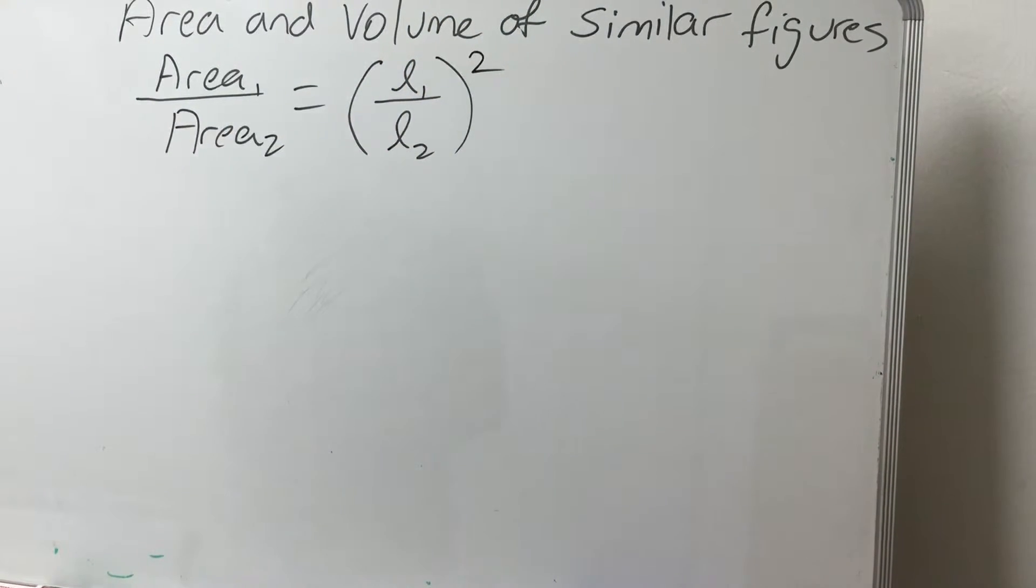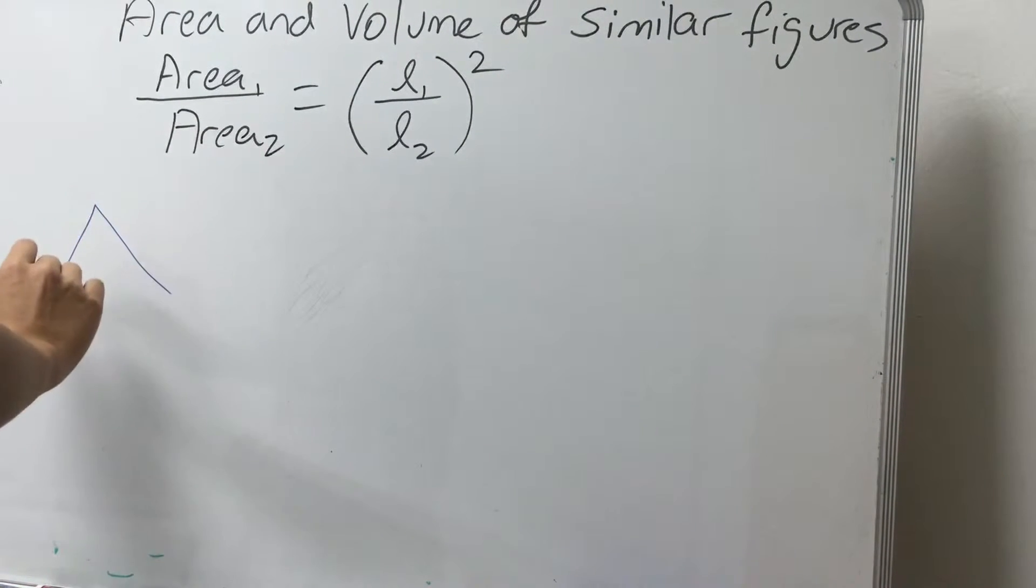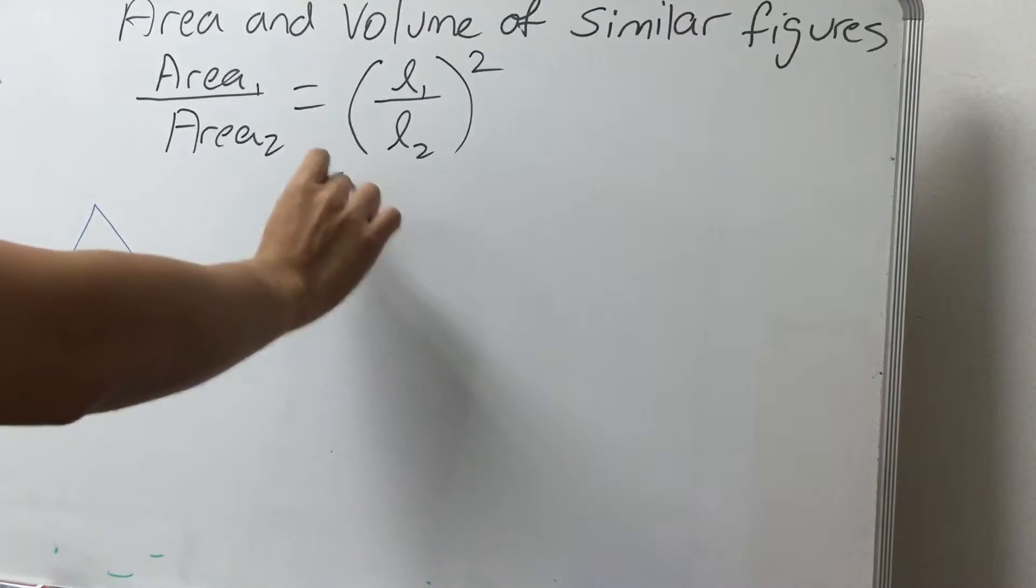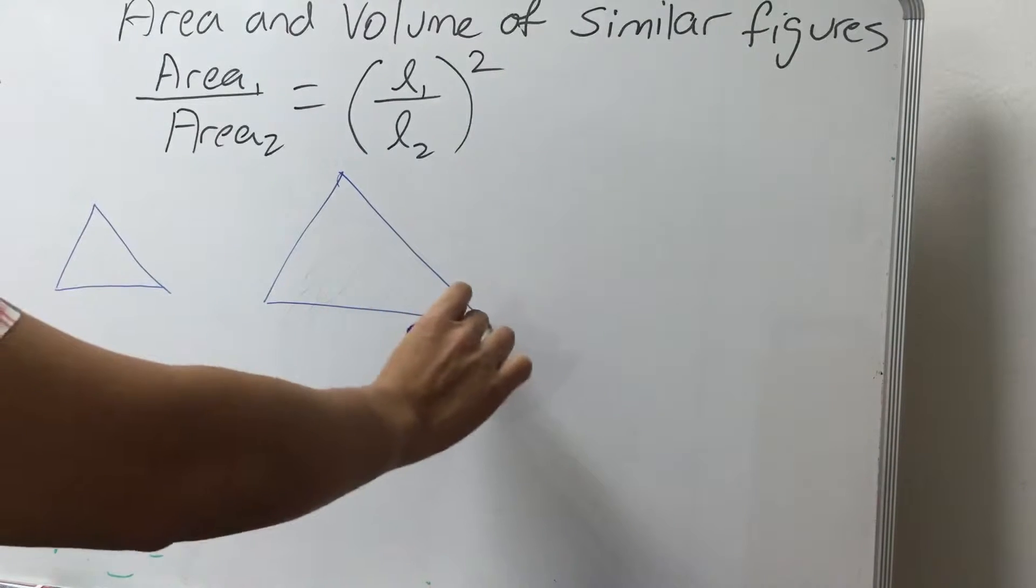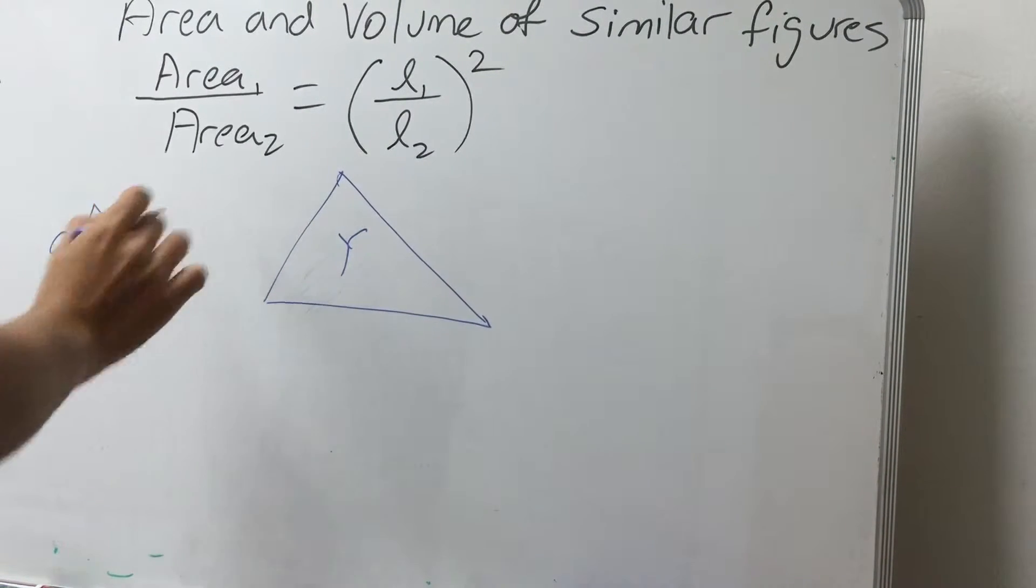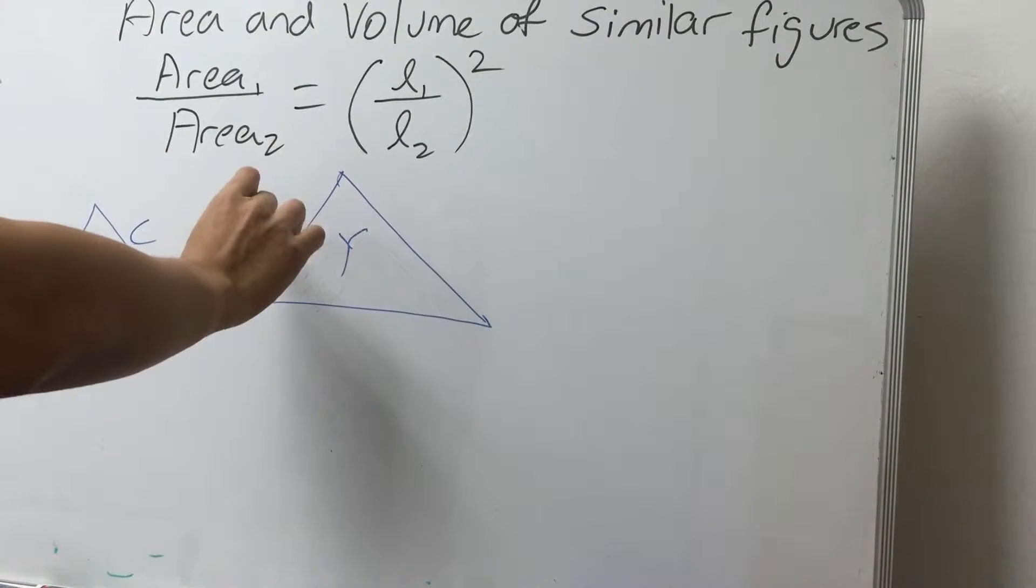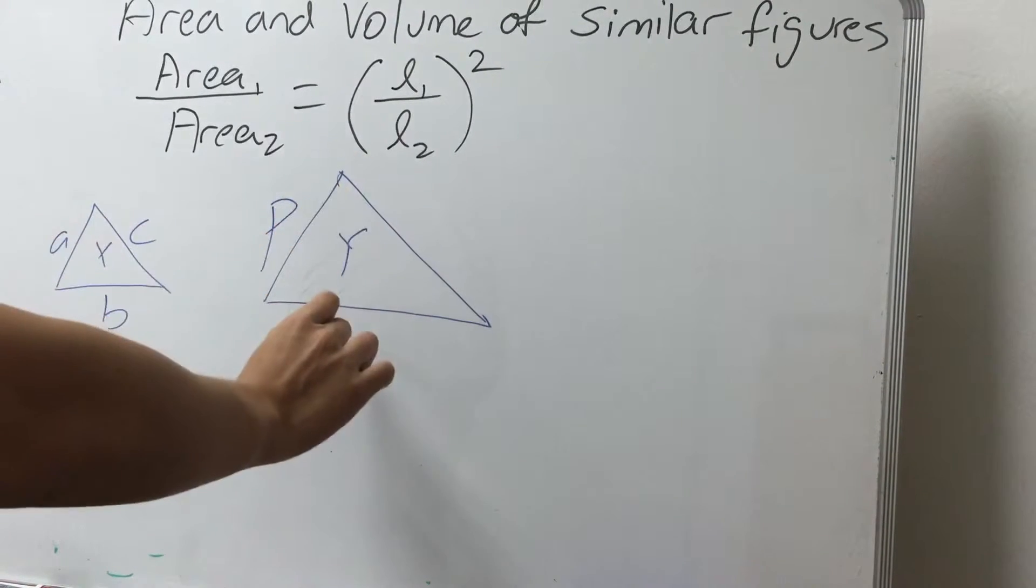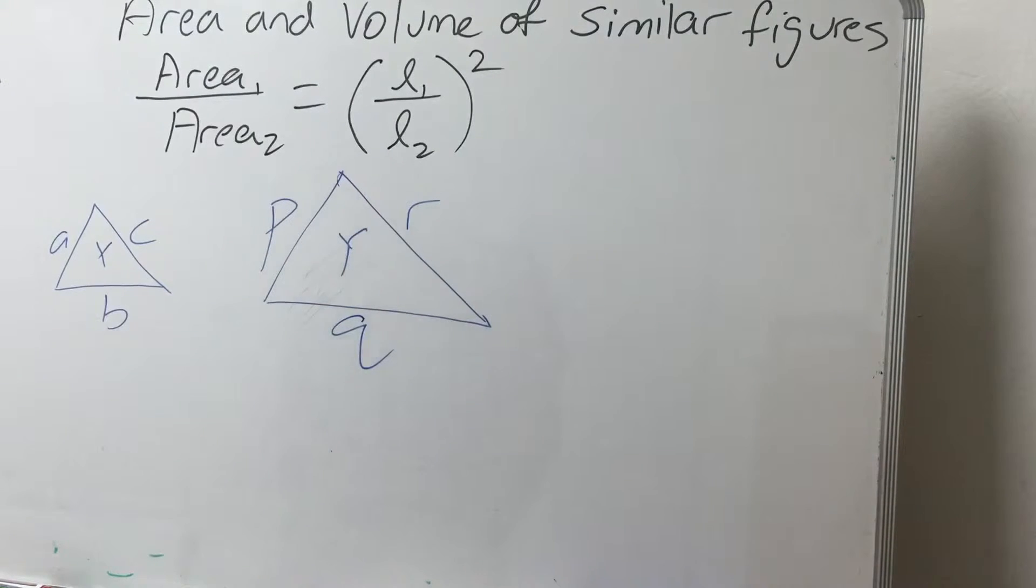So I'll give you some examples. For example, we have these two triangles which are similar. Let's say we have this small triangle and this big triangle, and you have shown that triangle X is similar to triangle Y. Let's call this side A, this side B, and this side C. Let's call this side P, Q, and R.